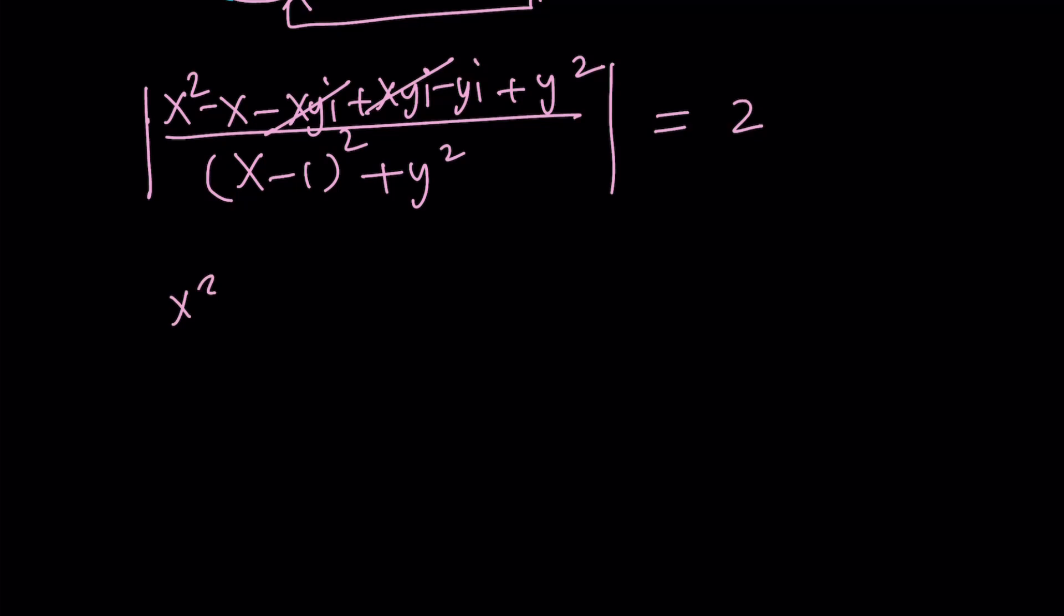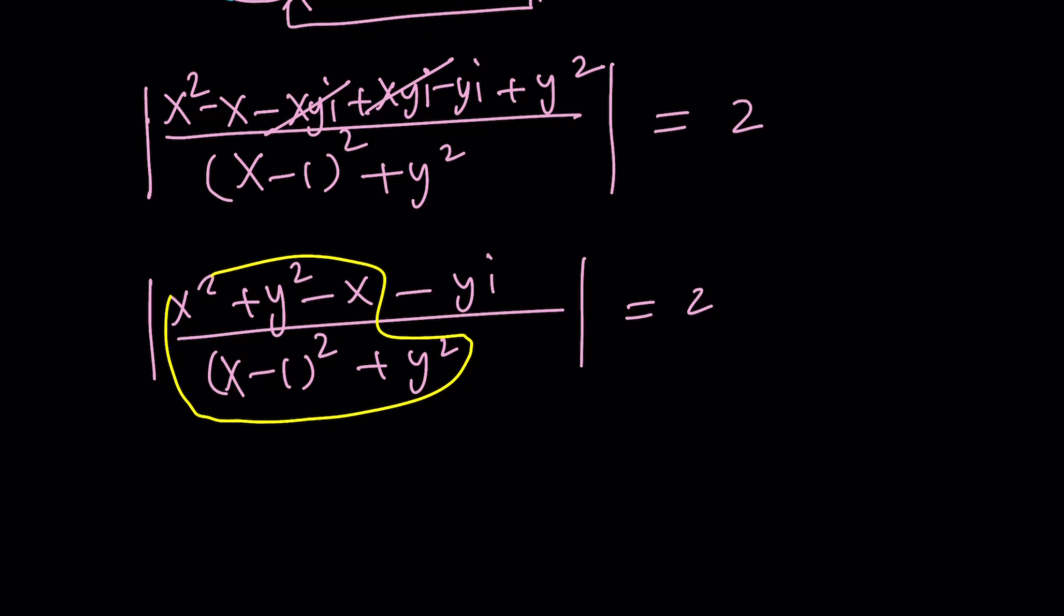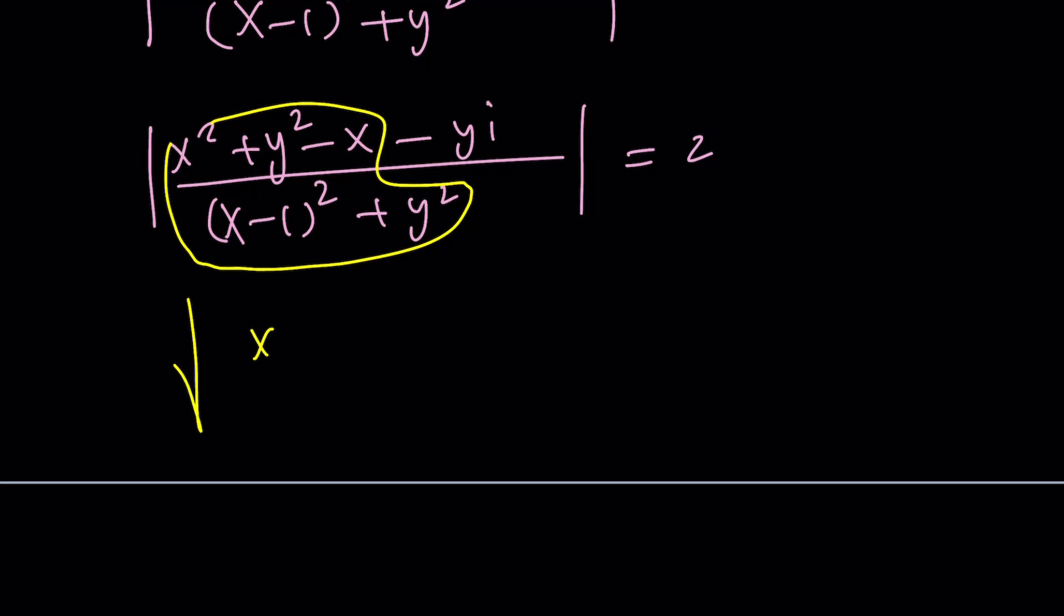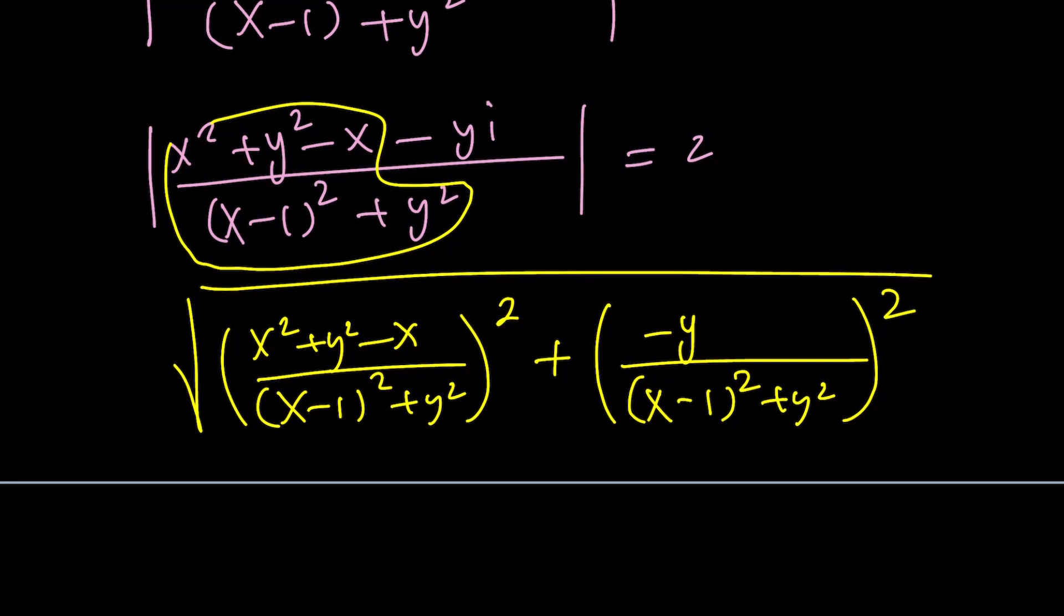Now, we can write this as x squared plus y squared minus x minus yi over x minus 1 squared plus y squared. Now, at this point, obviously, it would make sense if you separated the real and imaginary parts. So, you can write it like this. This minus this divided by the bottom. So, the absolute value is going to be then this expression squared plus this negative y over, because that's supposed to be the imaginary part, squared, and the square root of the whole thing. And that's equal to 2.